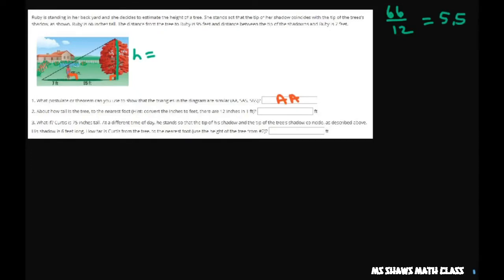Then you just set up a proportion. So we need the height. Let's do her height, which in feet is 5.5, is to 7, as the height is to 95 plus the 7. Just remember that when you're doing the bigger triangle, you have to add the 7 and the 95, and that's going to give you 102.